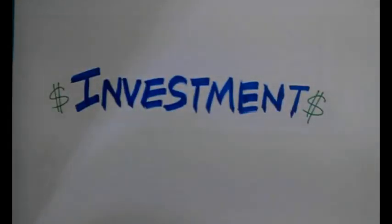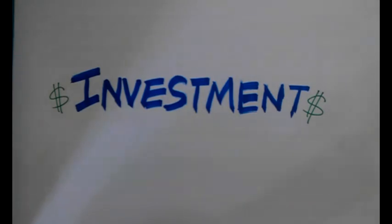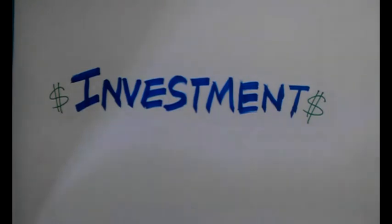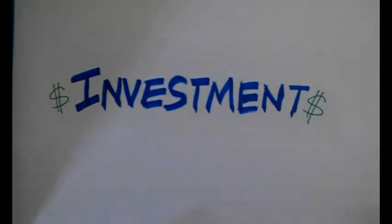The second component of our aggregate expenditure manager is investment. There has been quite a bit of confusion about what types of investment we are actually talking about in introductory microeconomics. Today I'm going to introduce the three types of investments that are accounted for in the capital letter I in the AE equation.